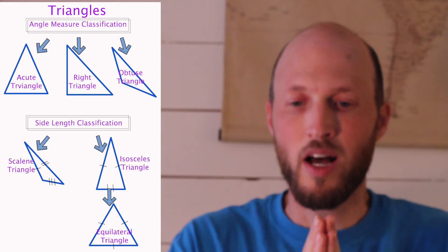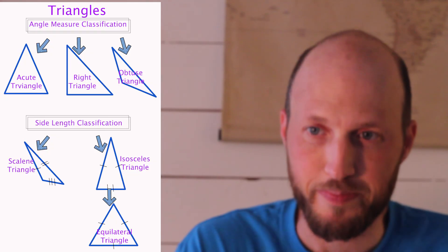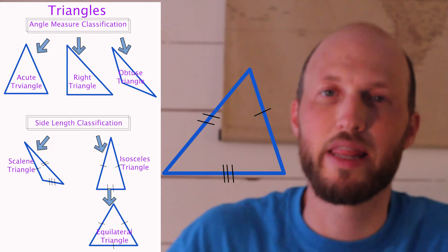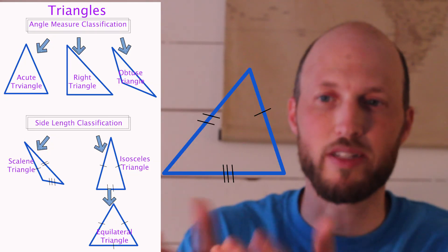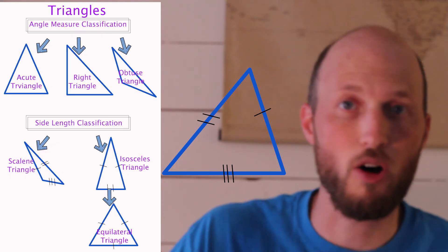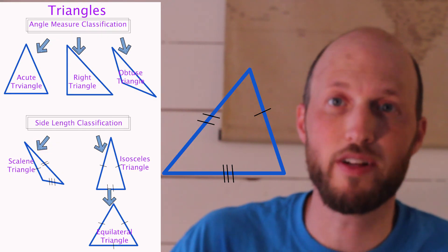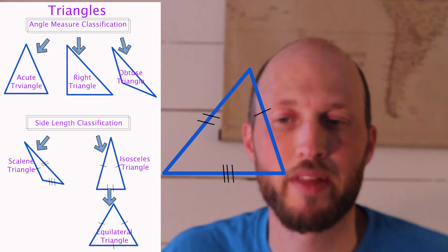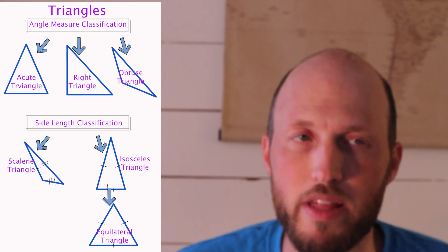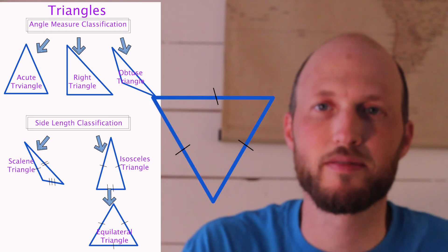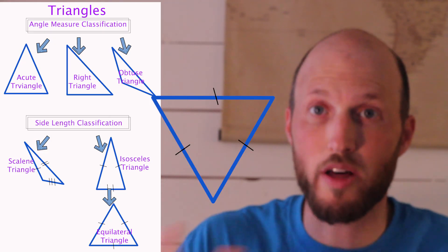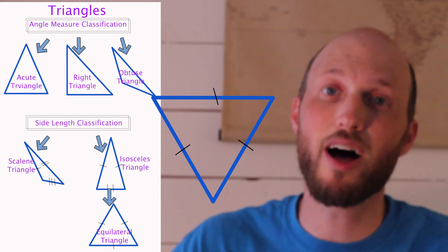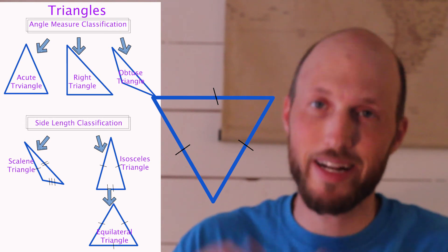Let's give a couple of practice examples. What do you think this triangle is? All three sides are different, which makes it scalene. What do you think this one is? All three sides are the same, which means it's equilateral — but it is also isosceles.